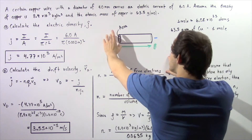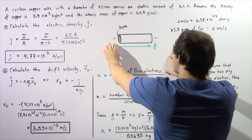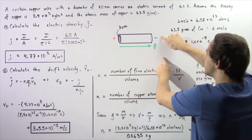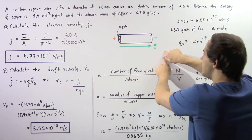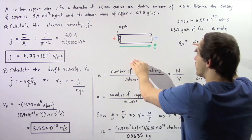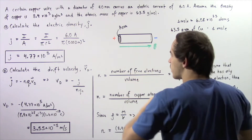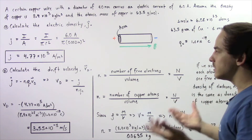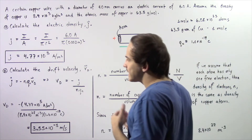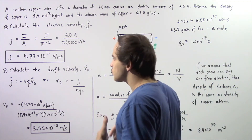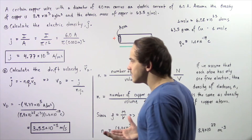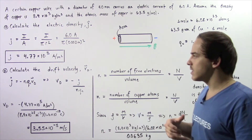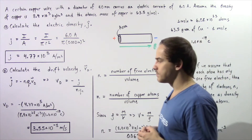So if this is our higher potential, positive, and this is our lower potential, negative, the electric field points in this direction. Now let's move on to part B: calculate the drift velocity of our electrons given by v subscript d.